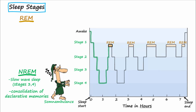During REM cycles, skeletal muscles are paralyzed, except for those for eyeball movement and the diaphragm for breathing. However, the brain is very active, and for this reason REM is sometimes referred to as paradoxical sleep.